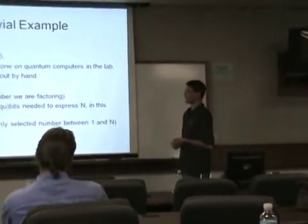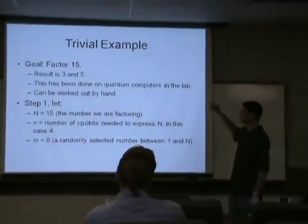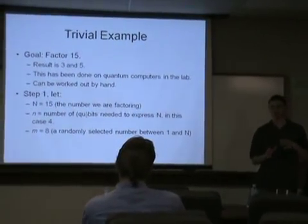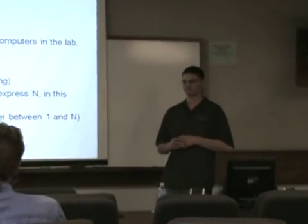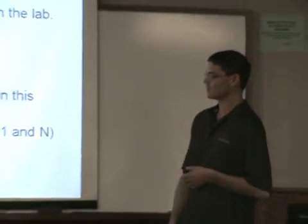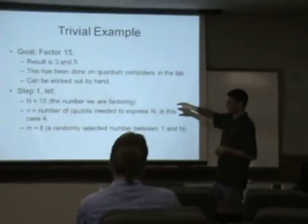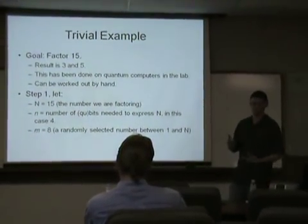So we'll walk through this trivial example of factoring 15. Everyone knows the answer is three and five. This has actually been done on quantum computers in the lab. We think quantum computers commercially, maybe about 15 years out, but that's a guess. So a lot of the actual physical implementation of quantum computers are just maybe a handful or two of qubits in some physicist's lab, taking up a room of equipment. So as a practical technology, we're still a ways out. But this example has been carried out. So step one of the algorithm, we're going to set big N to 15. That's the number we're factoring. And then n is the number of qubits we need to express N, in this case, four. And then we select M equals eight. And that's just basically randomly selected.